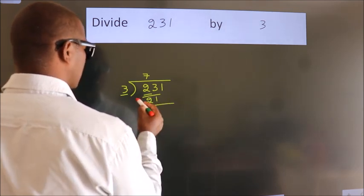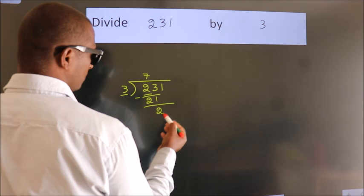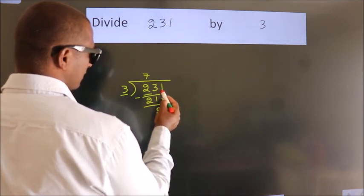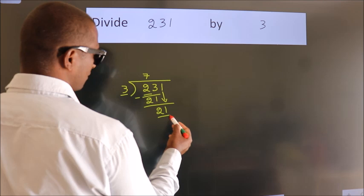Now we should subtract. We get 2. After this, bring down the beside number. So, 1 down. So, 21.